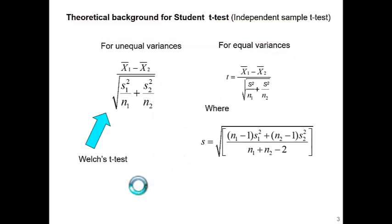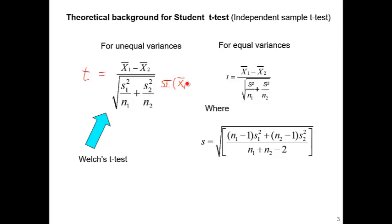This is the formula of a t-test. The numerator is the average difference — you compare average total cost in deceased patients and average total cost in survived patients, and then subtract one from the other. That's the numerator. The denominator is the standard error of x1 minus x2.